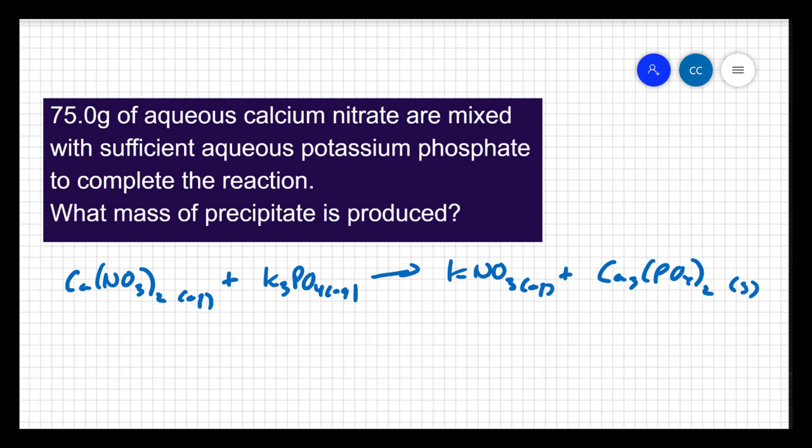We're going to look for the mass of calcium phosphate when we're done. Now to finish this step, we must balance the reaction. You can't do stoichiometry without a balanced equation.